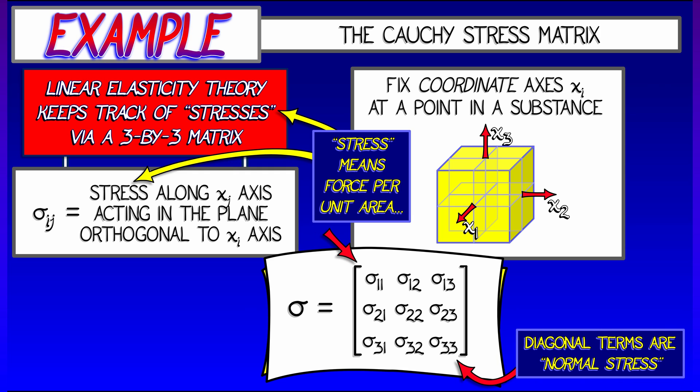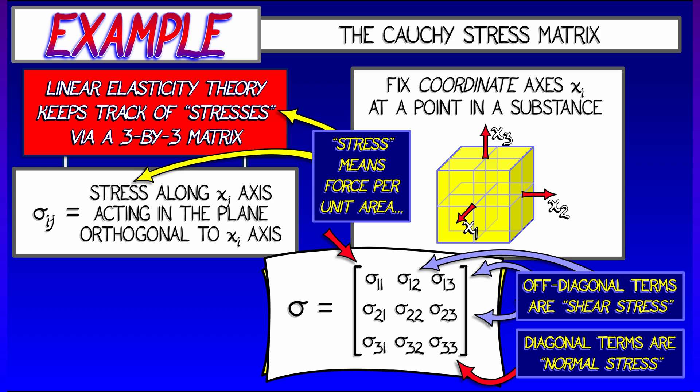The diagonal entries are special—these are called normal stresses that record push and pull. The off-diagonal terms are shear stresses that measure sliding forces per unit area. Together, these give you an interesting 3x3 matrix.